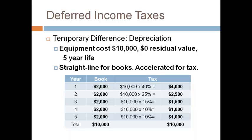You should notice the depreciation for books is different than the depreciation for tax. In the first two years, tax depreciation is greater. In the last three years, book depreciation is greater. This is a temporary difference because after five years the asset is fully depreciated and the total cumulative depreciation expense is the same — the difference is only in how much is expensed during each year.